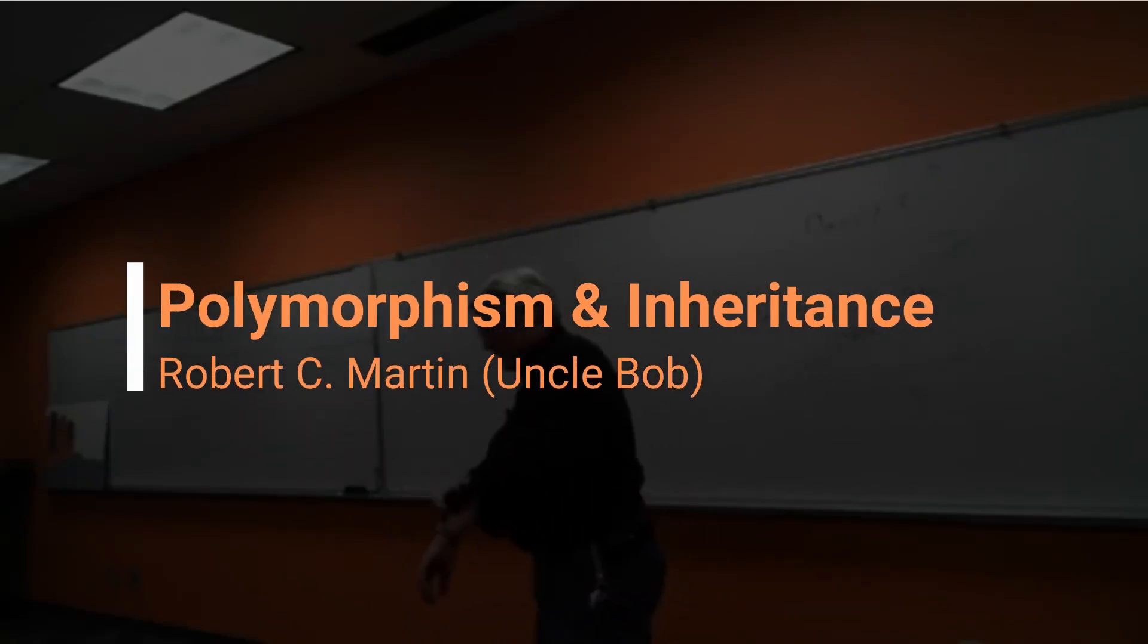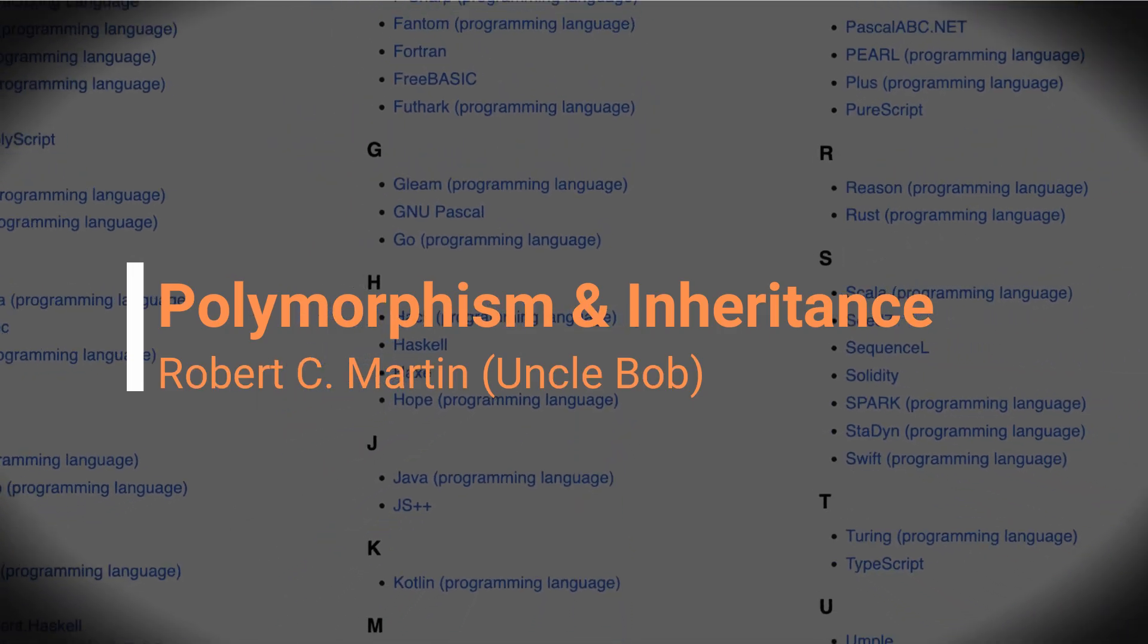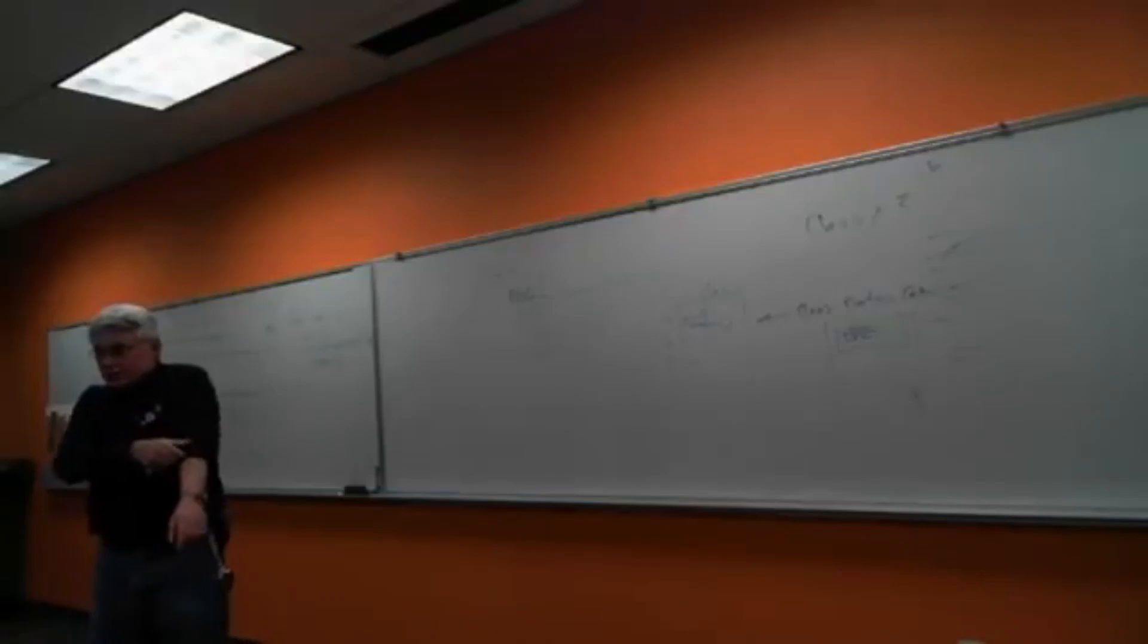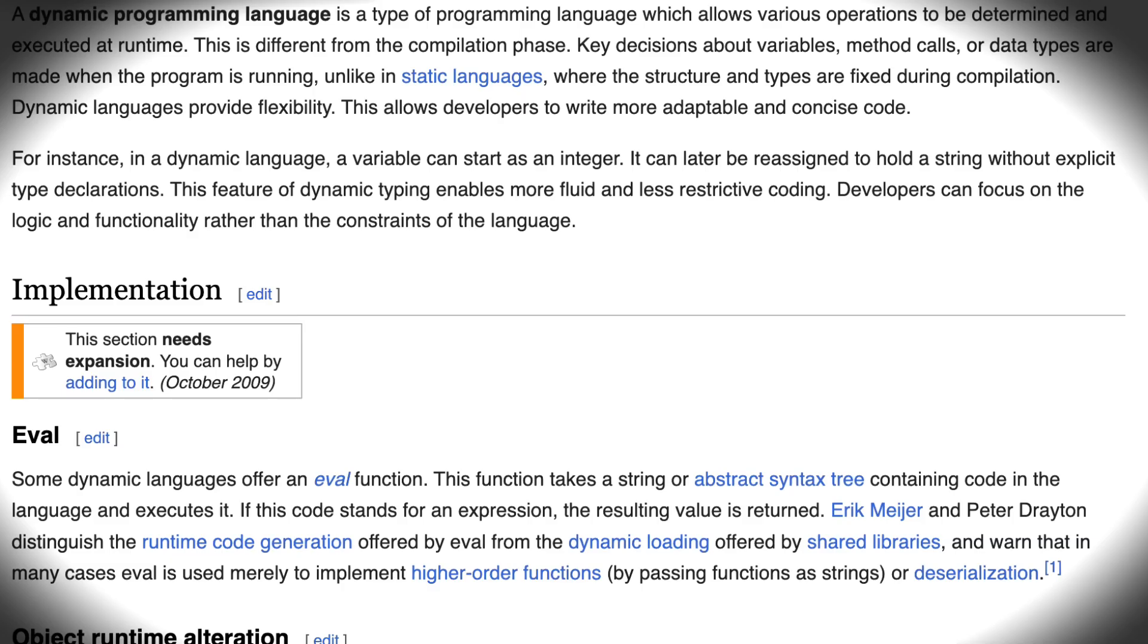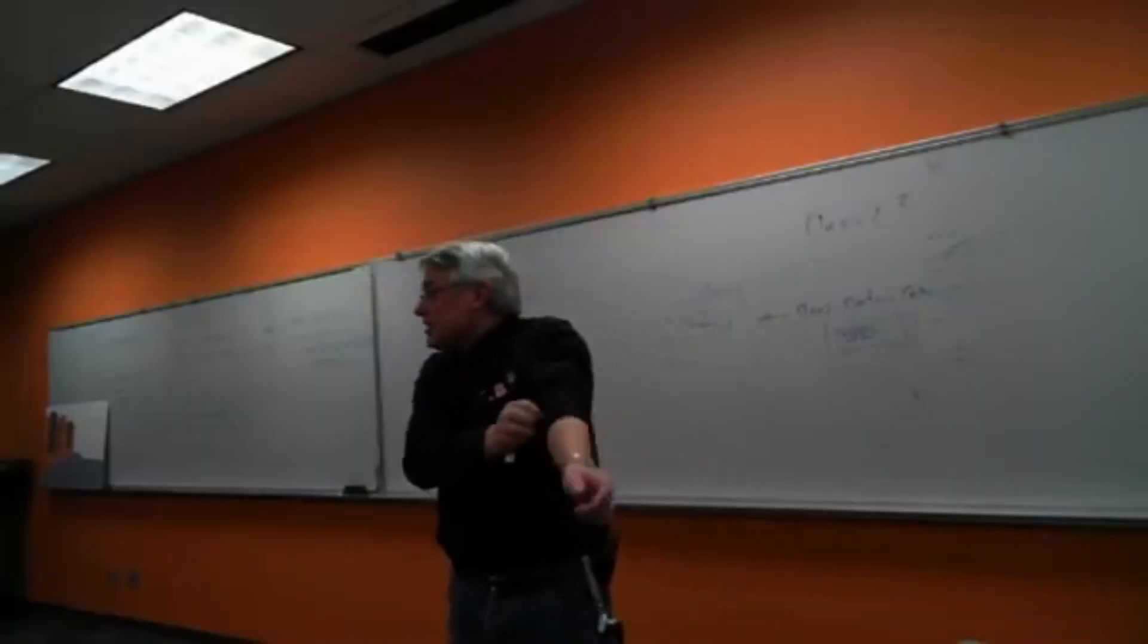In statically-typed languages like C++, Java, and C#, polymorphism depends upon inheritance. But in dynamically-typed languages like Ruby, Smalltalk, or Python, no inheritance is necessary.